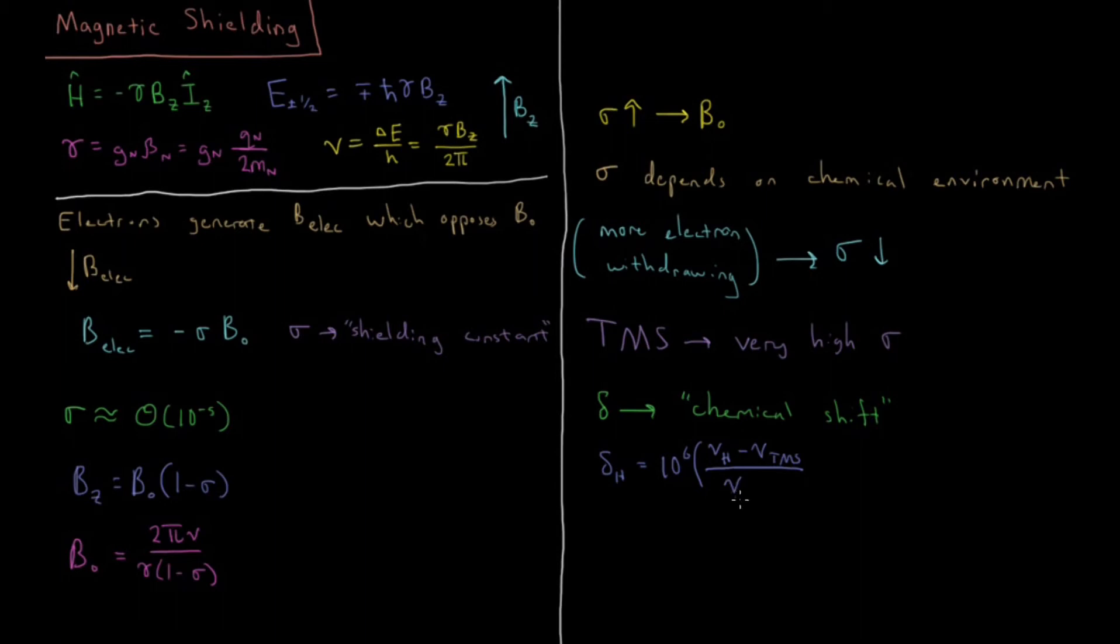And then this is divided by the frequency of the spectrometer, however many hertz that is, typically measured in megahertz. So if you have, for example, a 300 megahertz spectrometer, that would be 300 million hertz. And I'll go ahead and enumerate that as well. That nu for the spectrometer is equal to the spectrometer frequency.